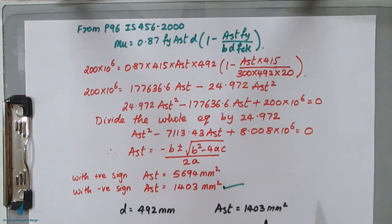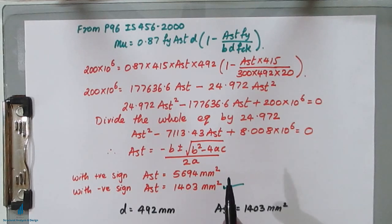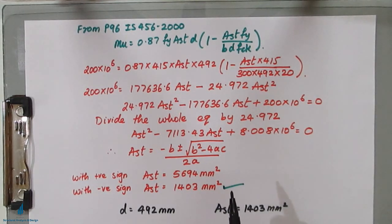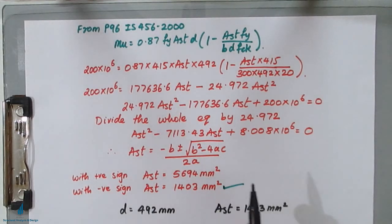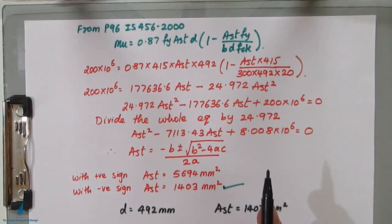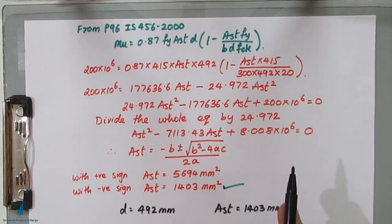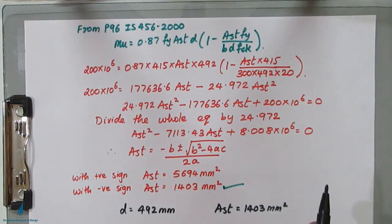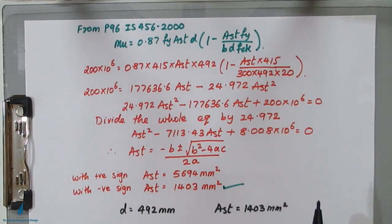So both unknowns are now calculated: effective depth d = 492 mm and area of steel Ast = 1,403 mm². There is also a simpler direct method to find Ast which we will see when solving design problems for singly reinforced beams. I hope you understood this Type 2 analysis. If so, please like, share, subscribe to All About Structural Analysis and Design, and press the bell icon for notifications. Thank you, friends.